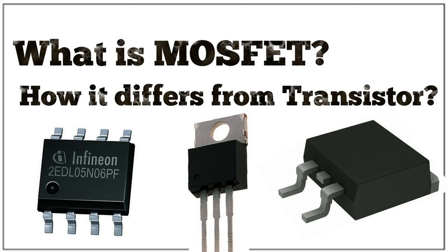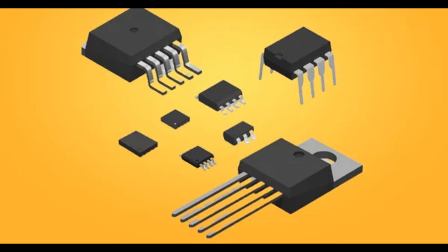MOSFETs are used in energy harvesting systems, efficiently managing and regulating power from ambient sources, important in sensor nodes or remote devices where power availability is intermittent. MOSFETs designed with low threshold voltages enable turn-on with smaller control voltages, reducing power consumption in the activation process. In summary, the low-power characteristics of MOSFETs make them well-suited for portable electronic devices, battery-operated systems, and energy-conscious IoT devices.